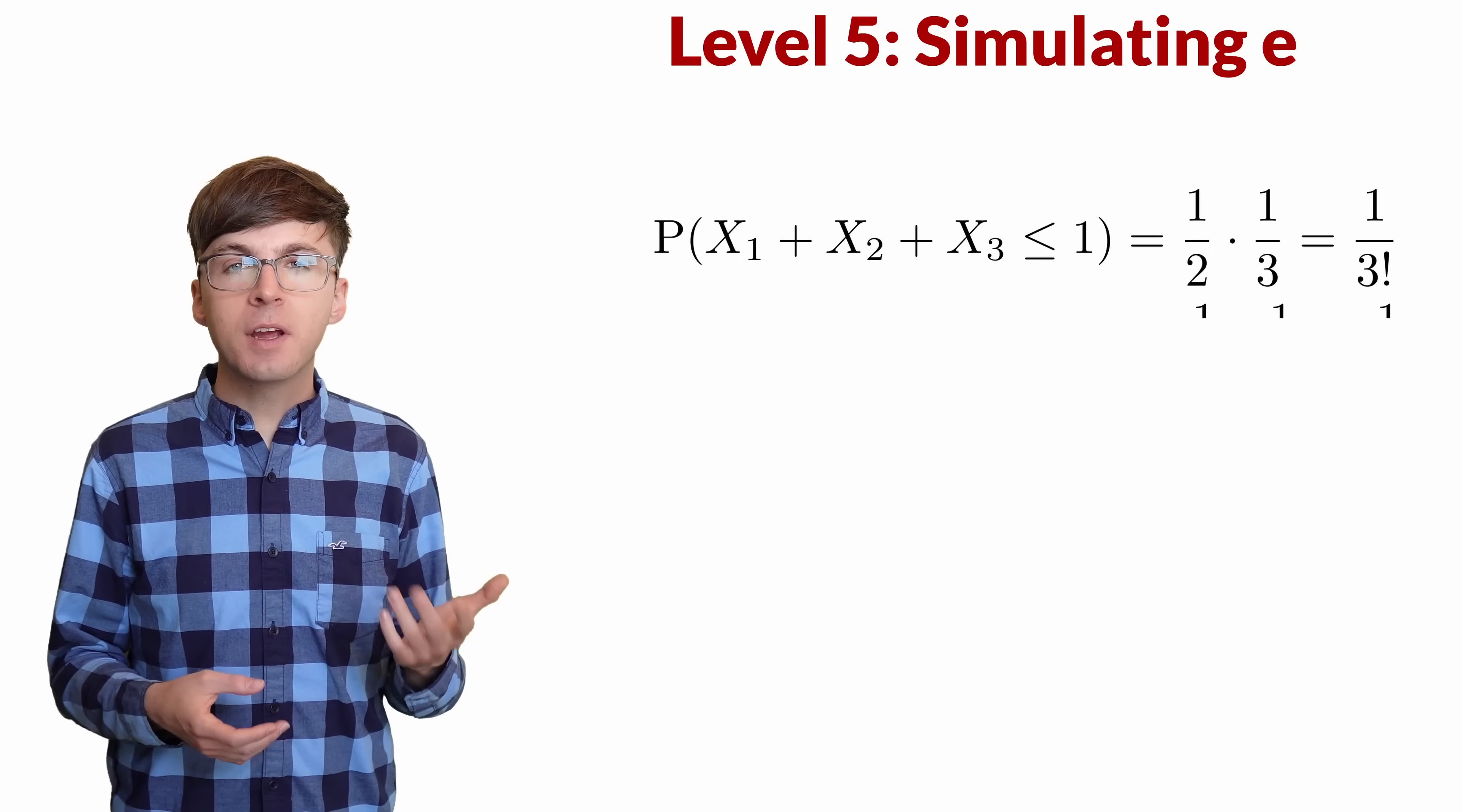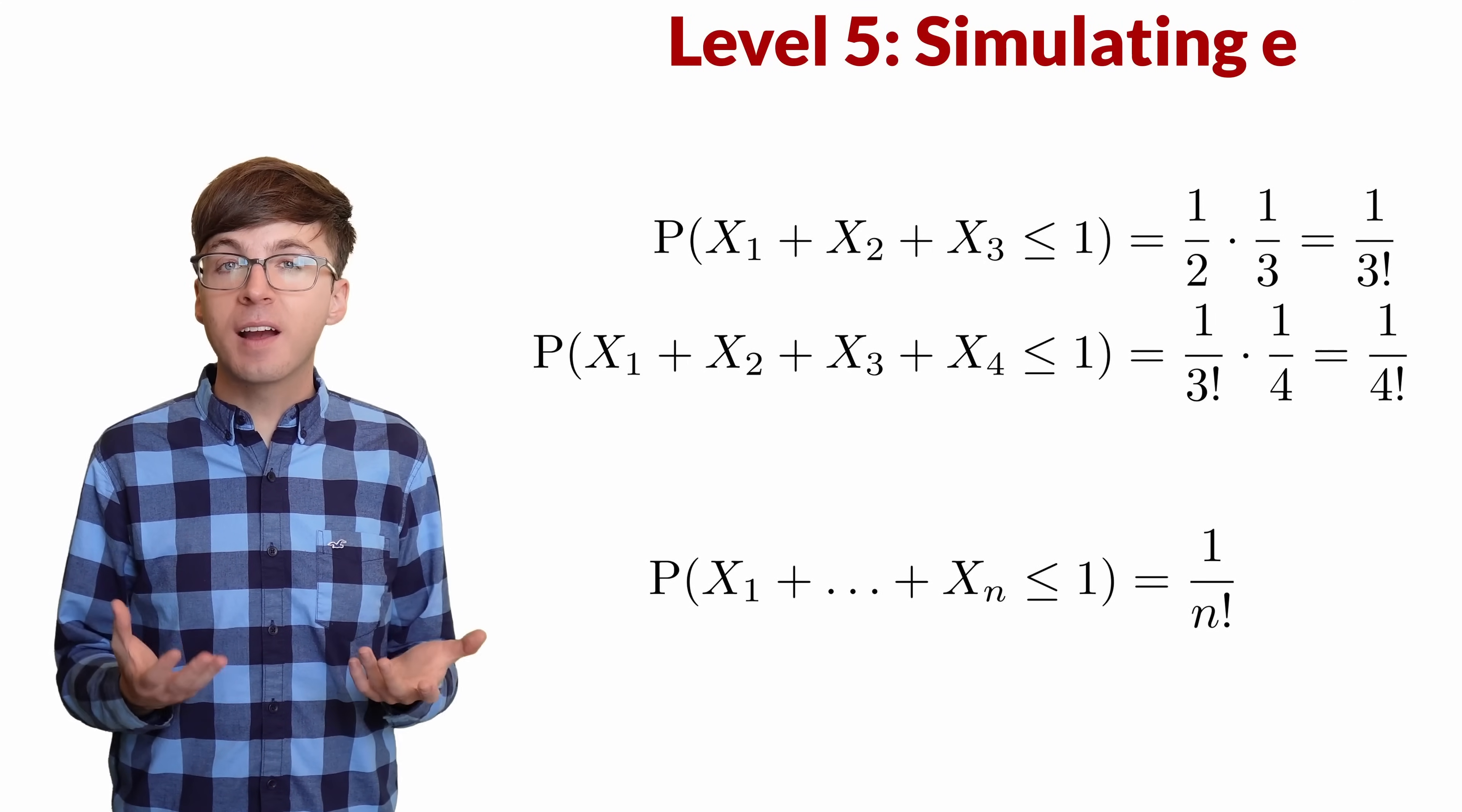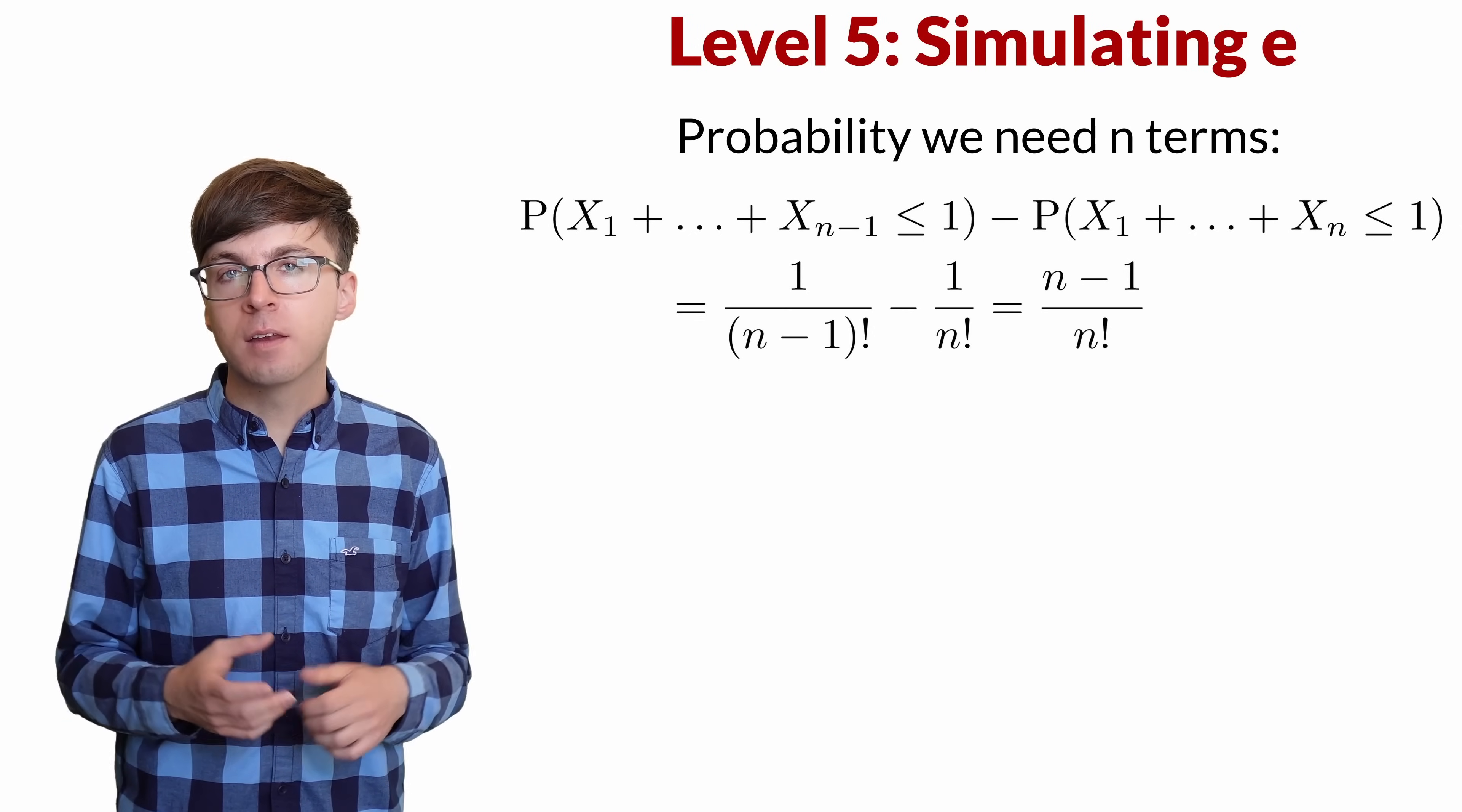Similarly, when we go to n equals 4, we get the same probability multiplied by 1 fourth. That's 1 over 4 factorial. And for a general n, the probability is 1 over n factorial. Now we can plug these in to find the probability that it takes n uniform random variables for the sum to first pass 1. The probability is 1 over n minus 1 factorial minus 1 over n factorial, which we can write as n minus 1 over n factorial.